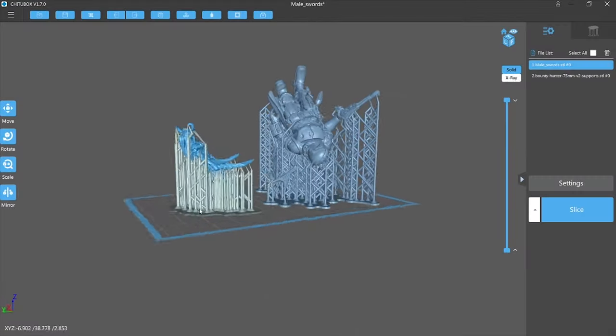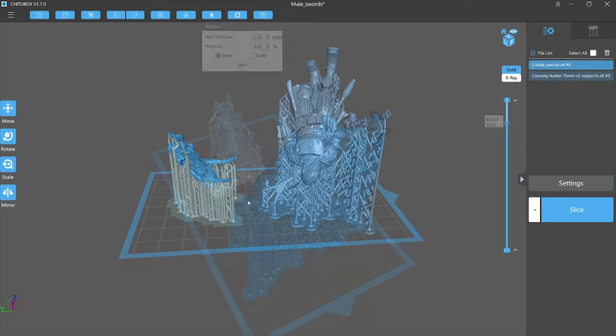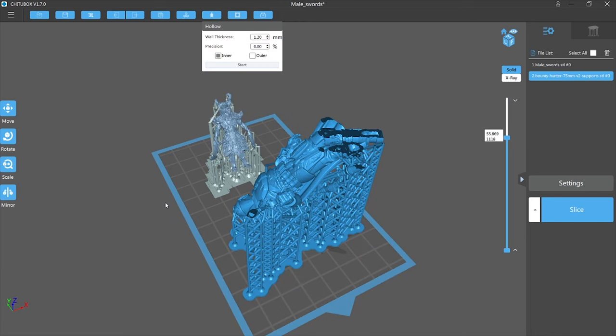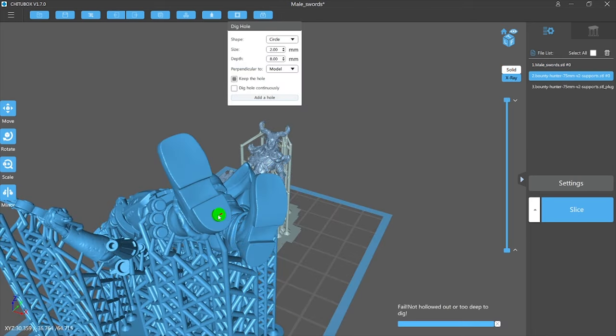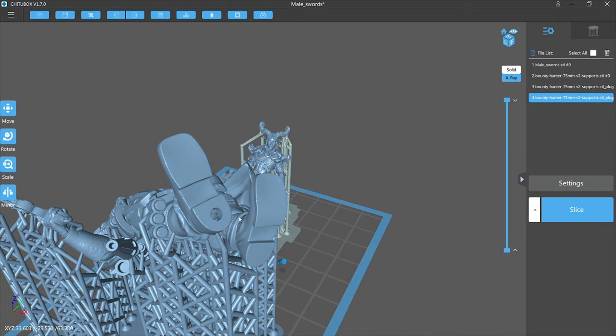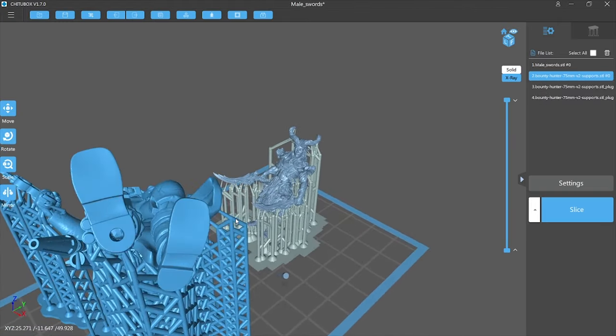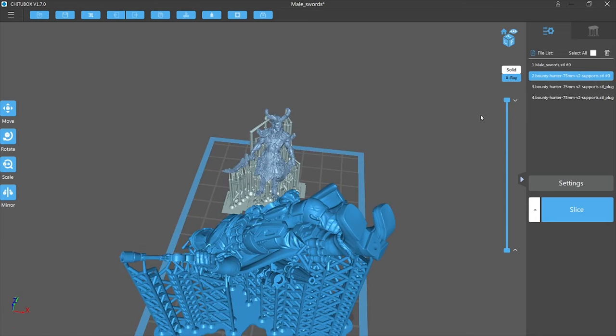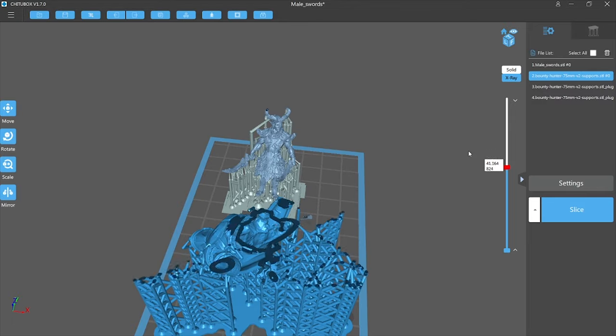I loaded both the pre-supported models in Chitubox. And I played around with some hollowing and drainage hole placement on the Mandalorian statue. But ultimately it didn't seem to really matter. I sliced them, dropped them onto my USB drive, plugged it into the 3D printer, and let it print for the next 4 and a half hours.